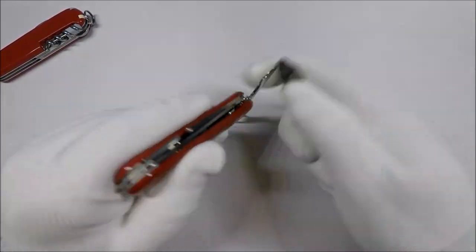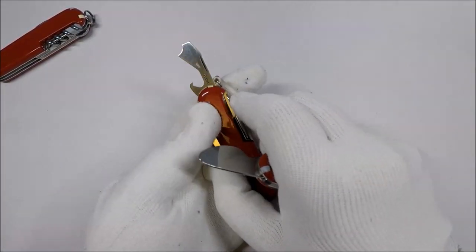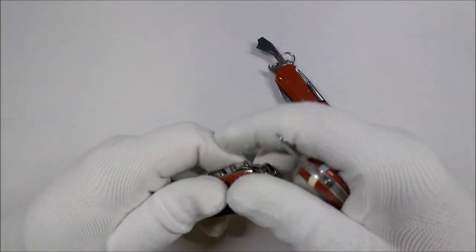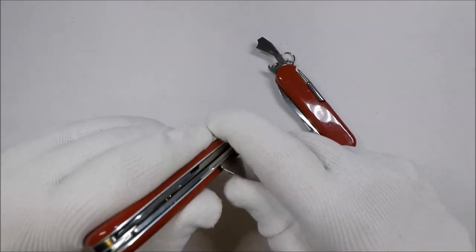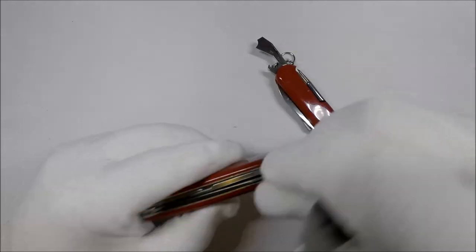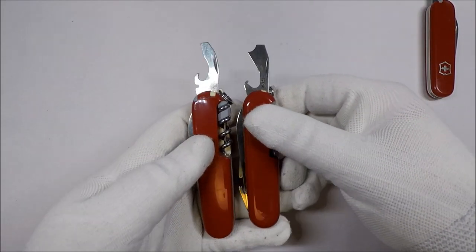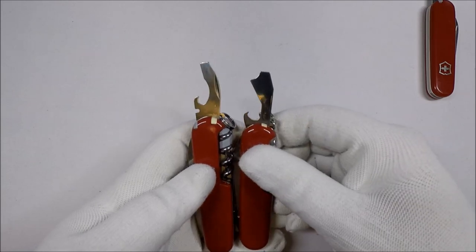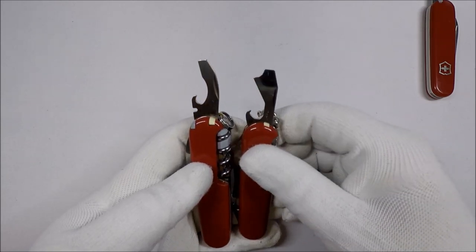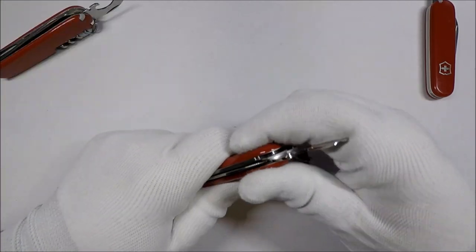Let's take a look at this thing. First of all, you get the combi tool. For comparison, the combi tool on the Victorinox compact. You can see there's a little bit of difference there, just difference in shape, that kind of thing.